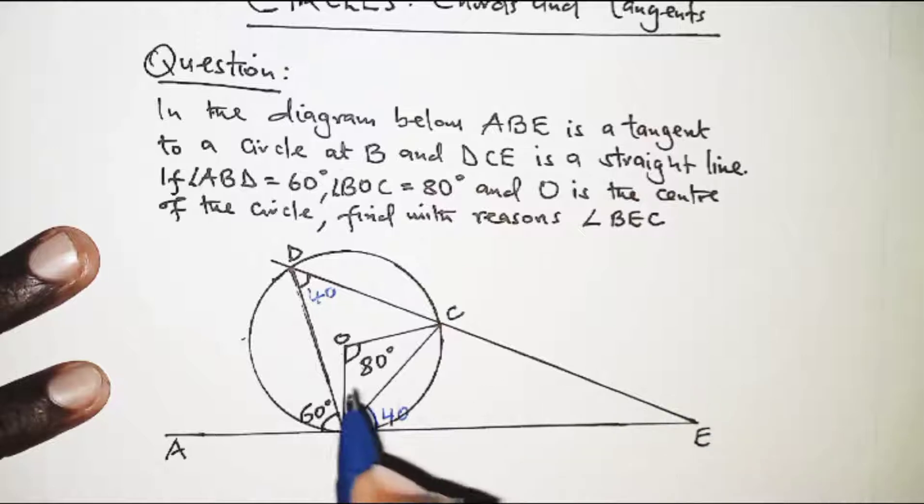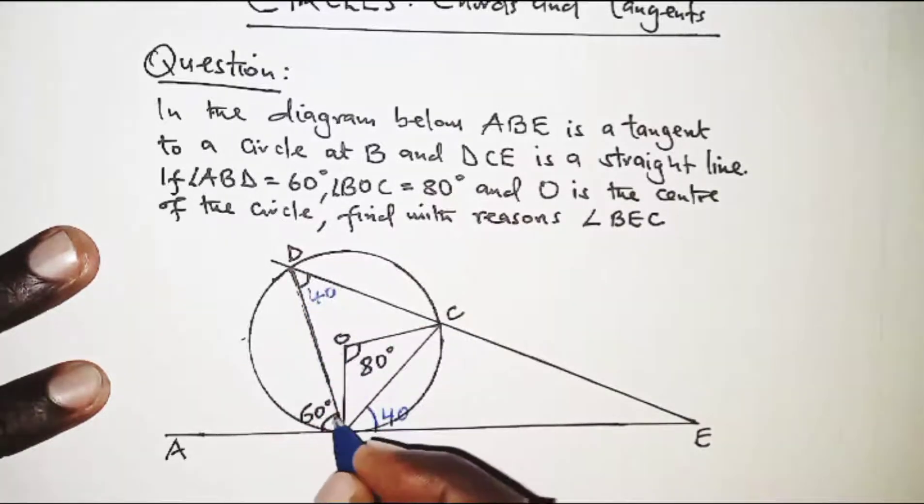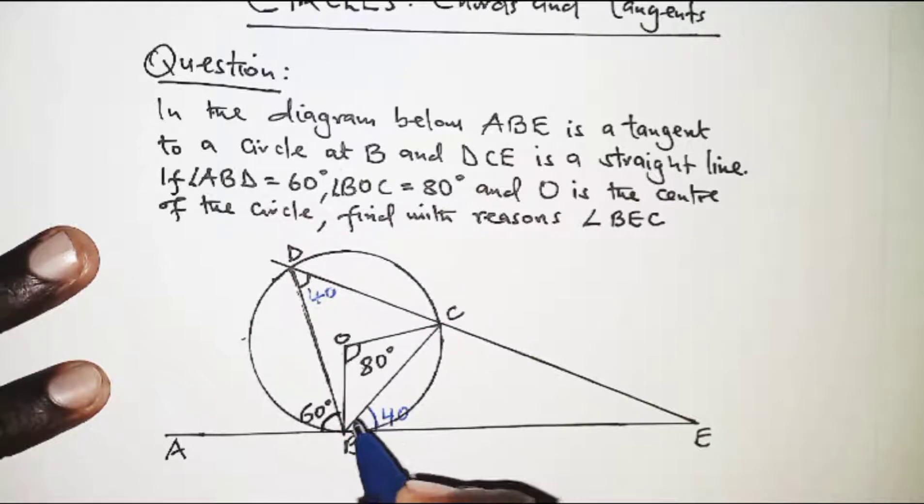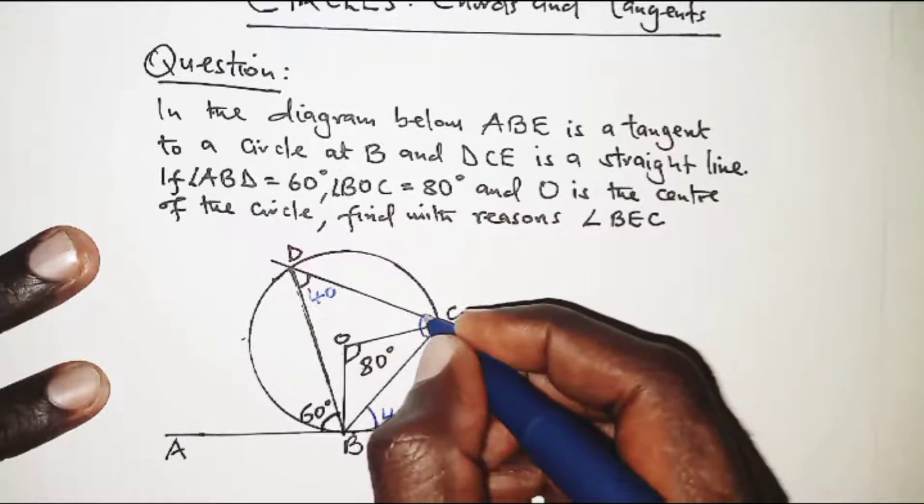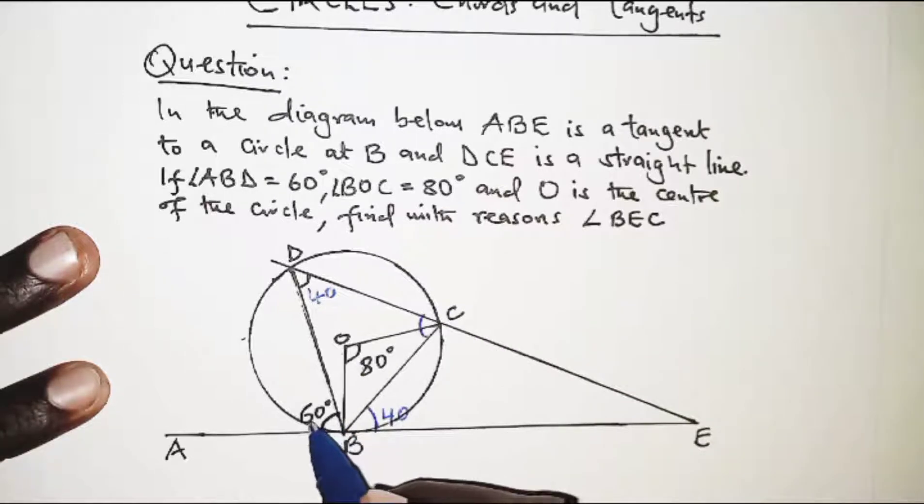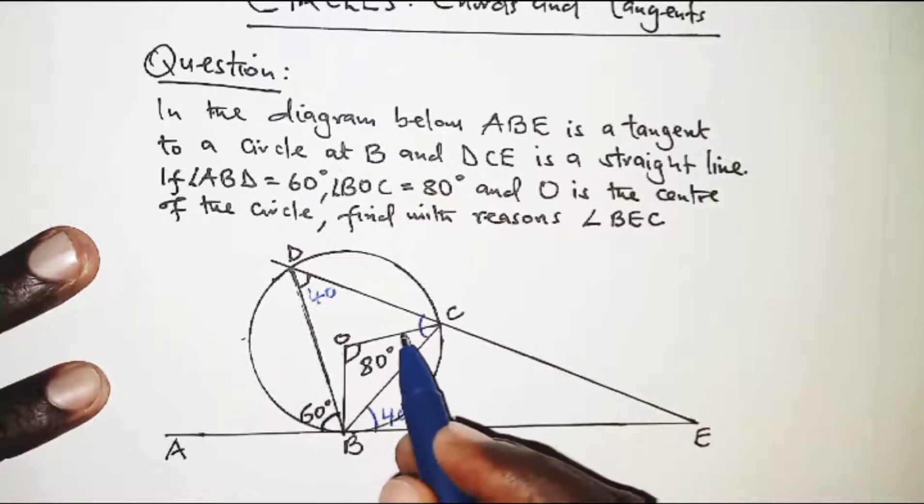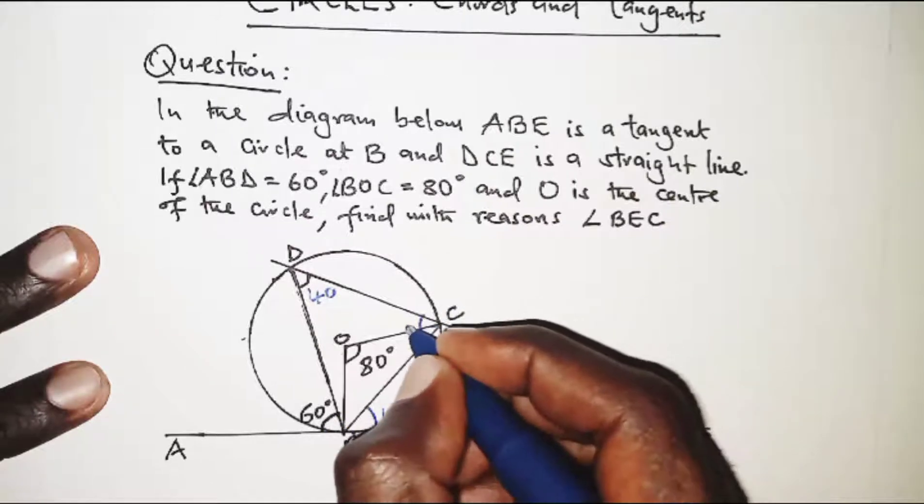Applying the same property, we have BD making an angle of 60 degrees with the tangent. Then the same BD subtends an angle at the circumference at point C. So again, angles in alternate segments should be equal. So if here is 60, here should also be 60.